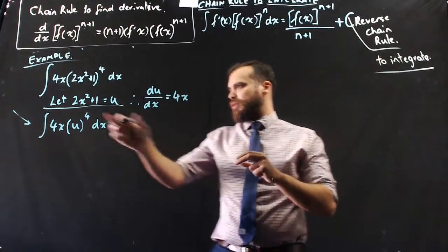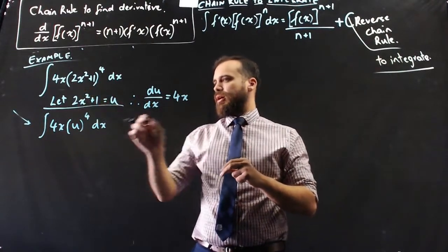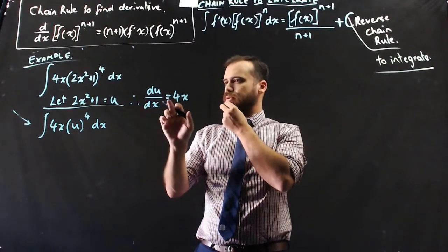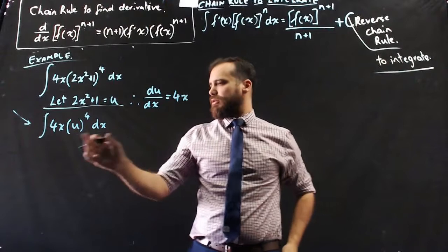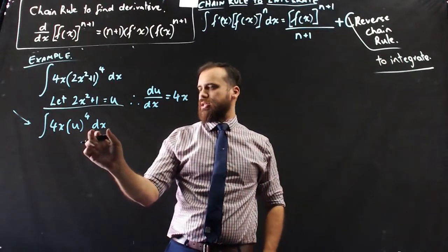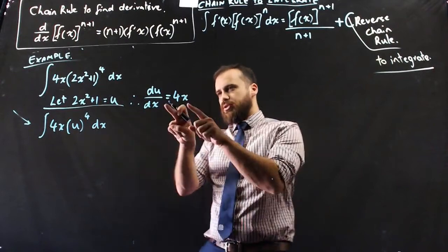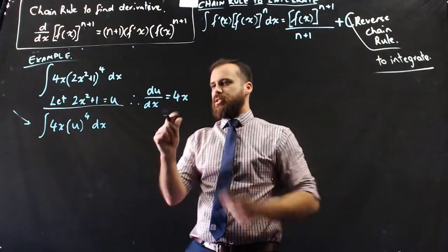Alright, so now I've got u. And I also know that the derivative of u with respect to x is equal to 4x. Now, I want to get rid of this dx here, this with respect to x. And I can do that by rearranging this.